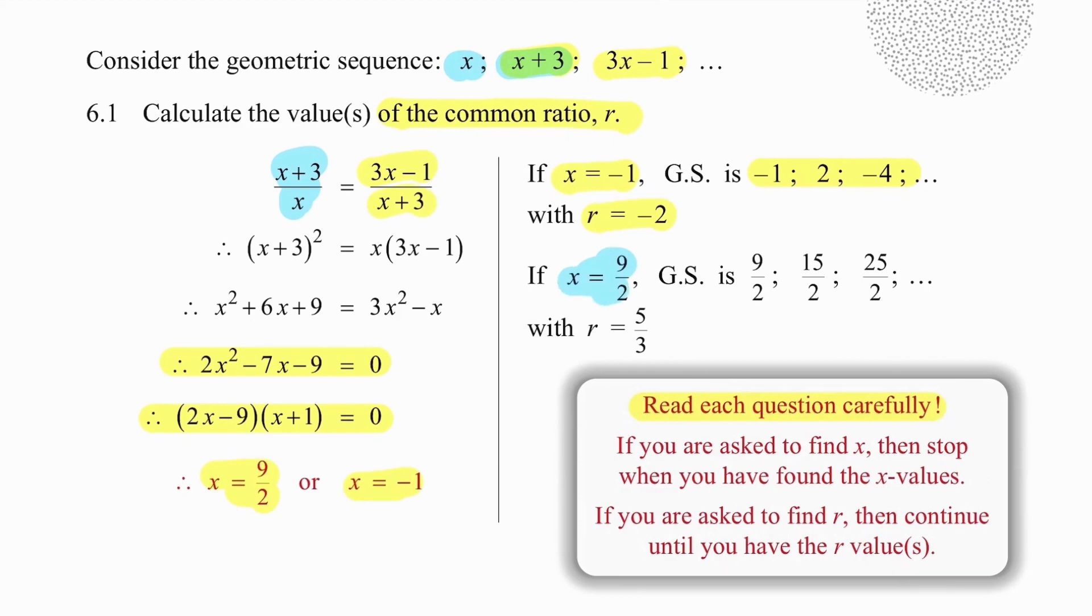Now we have to go back a second time, take our second value of x, generate the terms that that produces, and then we have to divide the second term by the first term in order to work out that the ratio is 5 over 3. So make sure you answer the question fully.